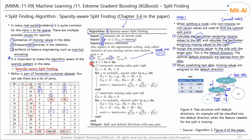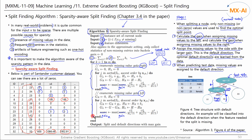Then we read through the features one by one to find the best one. Next, assign all missing values to the right node and calculate the gain for this split. Then assign all missing values to the left node and calculate another gain for this split. Finally, set the larger of these two gains as the default direction. If the gain is greater when assigned to the left, set the default direction to left, and all missing values are assigned to the left node as the default direction. This is the sparsity-aware split-finding algorithm.